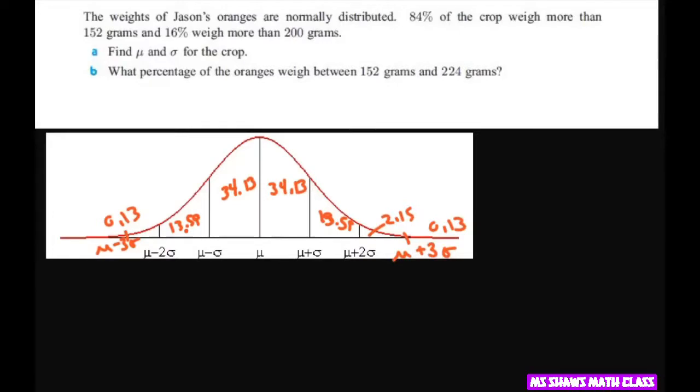So we have this normal distribution. It's normally distributed. Here are the percentages. There's your mean. That's what we're looking for in the standard deviation. So these are the percentages that go under each area. You add this up and this should all equal one.